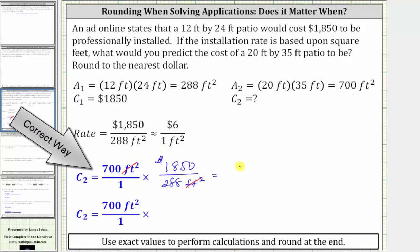leaving us with a product of 700 times 1,850, divided by 288. And notice how the units are now dollars. And now let's go to the calculator.